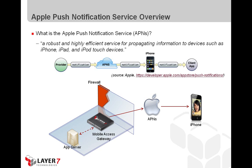Now, about the demo — we have a demo app that's going to call some of the new pieces available on the Layer 7 Mobile Access Gateway to support Apple Push Notifications. First, there is a new assertion for sending Apple Push Notifications, which helps to construct the notification package. And then there's another new assertion to receive information from the APNS called the feedback service.